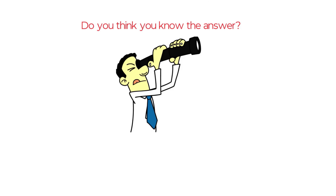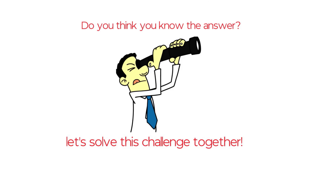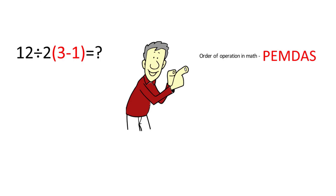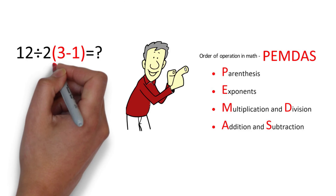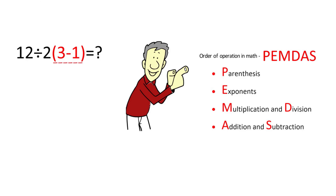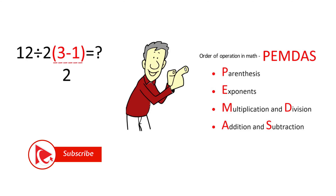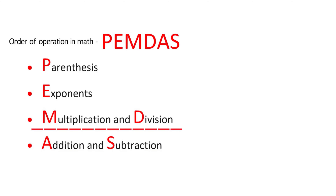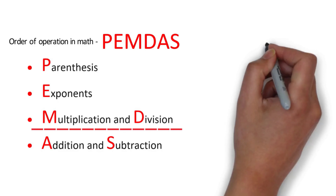Do you think you know the answer? Let's get it solved together. The order of operations tells us that the first expression we need to solve is in parentheses: 3 minus 1 equals 2. The big question is what to do next. PEMDAS tells us to do multiplication and division, but what it doesn't explicitly mention is that we do them from left to right.